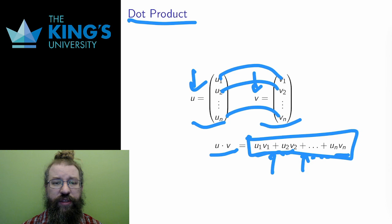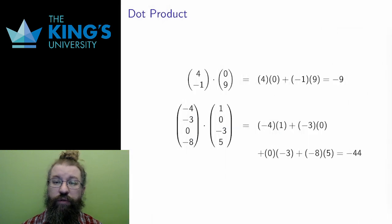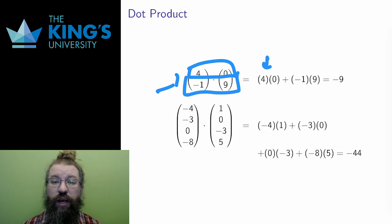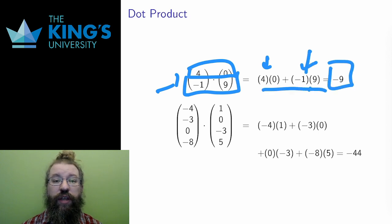Let me give some examples. First, in R^2, the dot product of (4, -1) and (0, 9) is formed by multiplying the first entries, 4 and 0, and the second entries, -1 and 9, and then adding the result together to get a total scalar of -9.